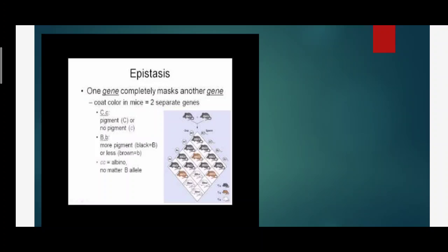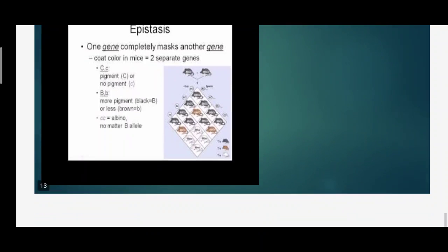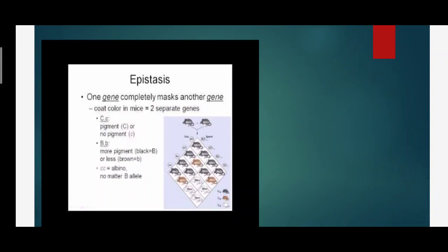The next interesting topic is epistasis. Epistasis means one gene completely masks another gene. Due to this concept, new combinations are developed. For example, in mice, black and white mice naturally exist, but after crossing they can form albino offspring — an intermediate color result. This is how different gene interactions create new phenotypic combinations, as observed in mice.